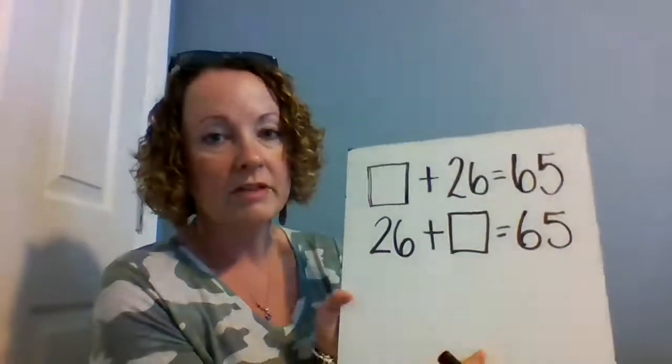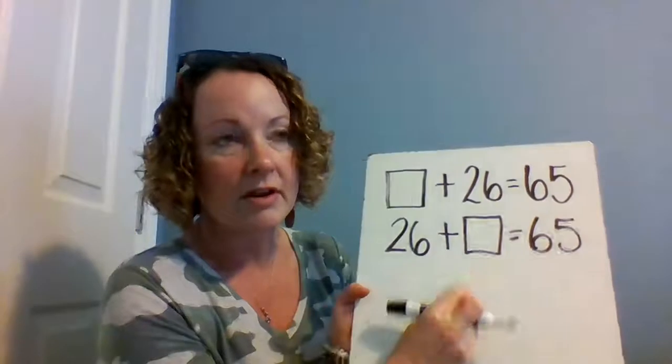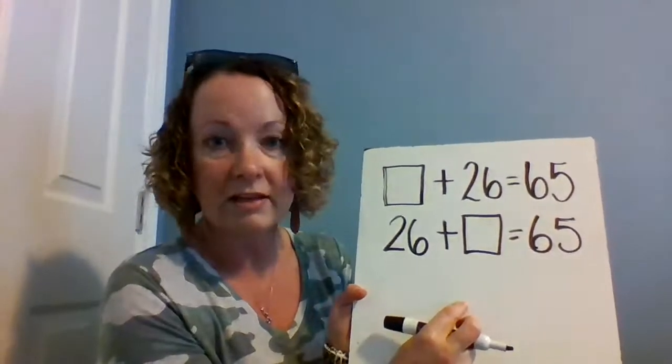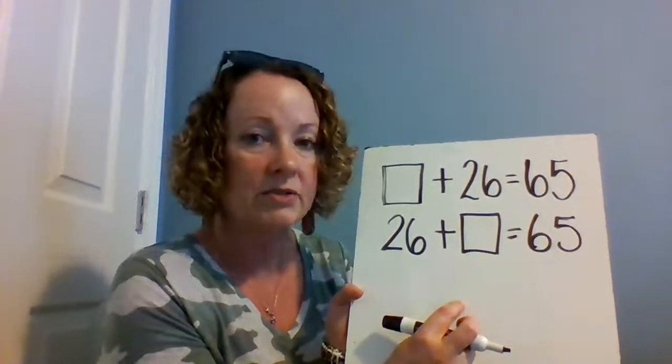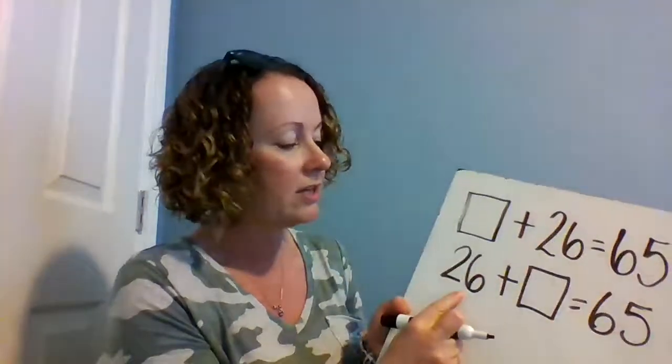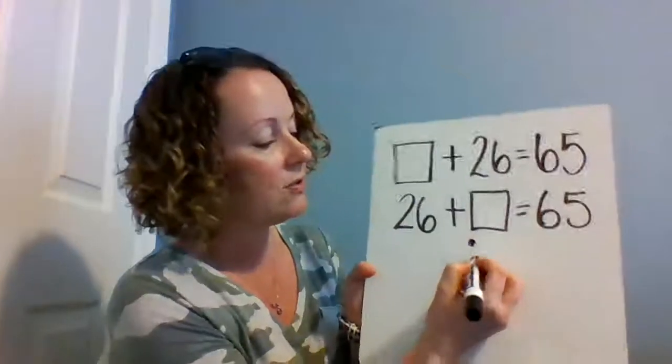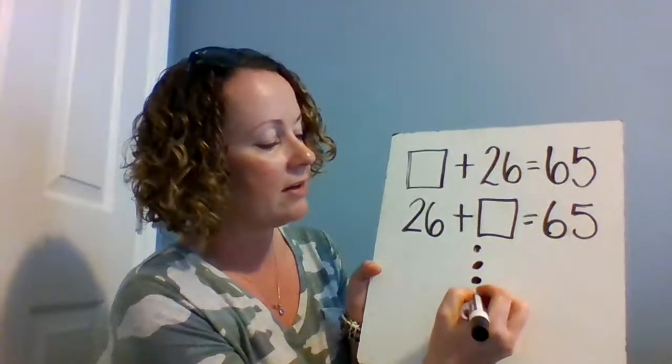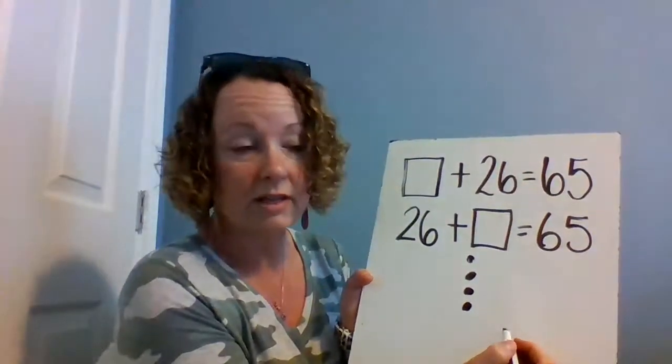Now what I'm gonna do is start at 26 and count on by ones until I get to the nearest multiple of 10. 26, 27, 28, 29, 30. Okay, so I got to 30, that's a multiple of 10.